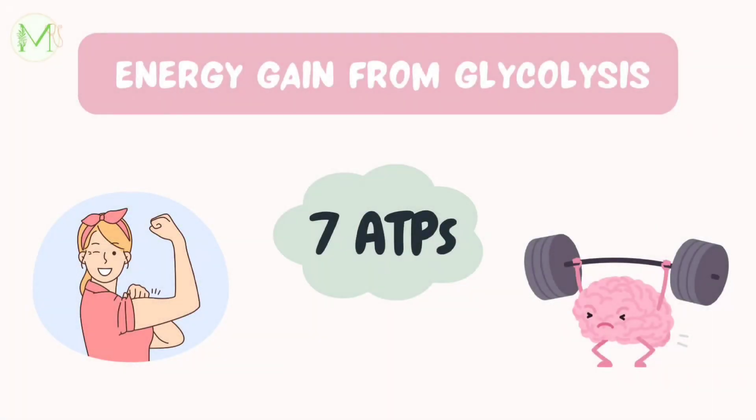In the glycolytic pathway, the net gain of energy is seven molecules of ATP, which is adenosine triphosphate. Let's see how.